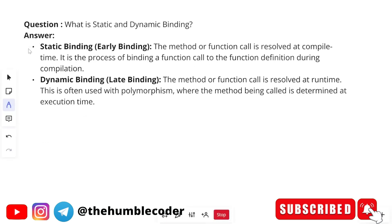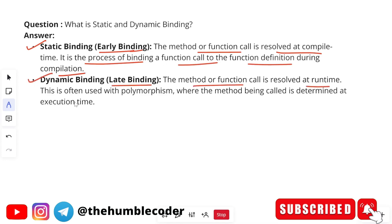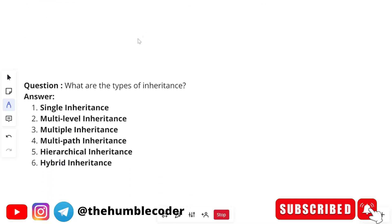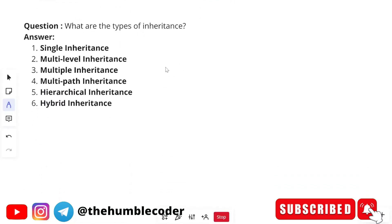Next question: What is static and dynamic binding? Static binding is also called early binding — the method or function call is resolved at compile time during compilation. Dynamic binding is also called late binding — the method or function call is resolved at runtime. This is often used with polymorphism where the method being called is determined at execution time.